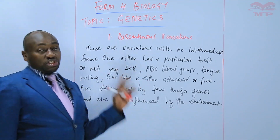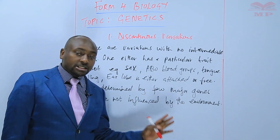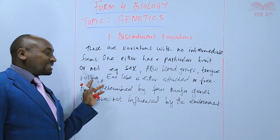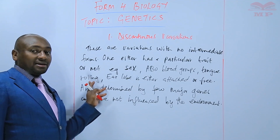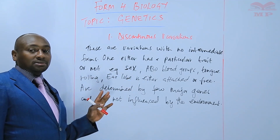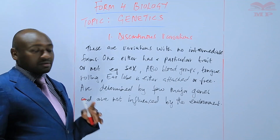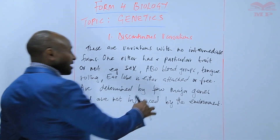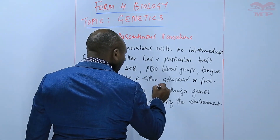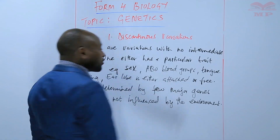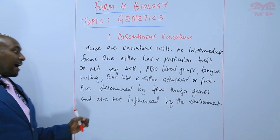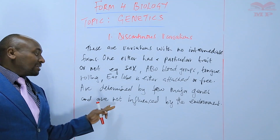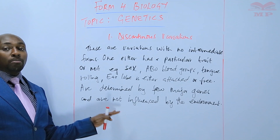Your blood group will not change. If you had blood group B, it remains B irrespective of where you go. If you are able to roll the tongue, then you are a tongue roller — you cannot be the other way. So discontinuous variations are determined by just a few major genes, and the environment has no role to play. Everything here is something that you are born with.